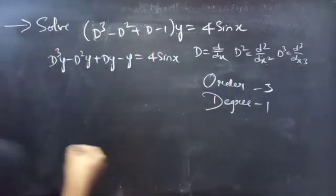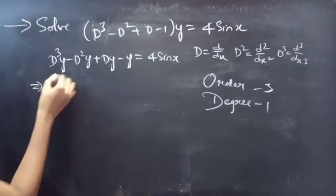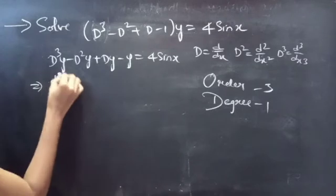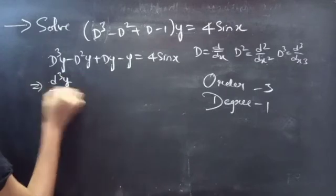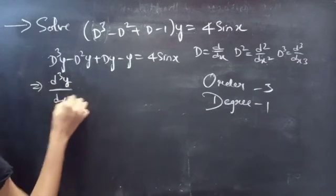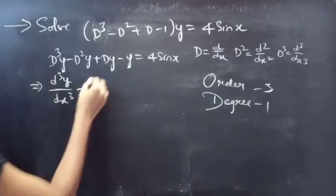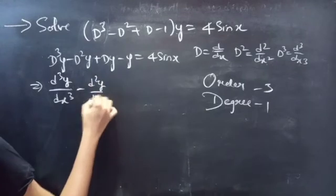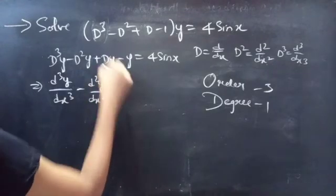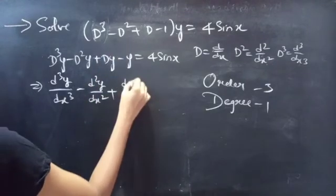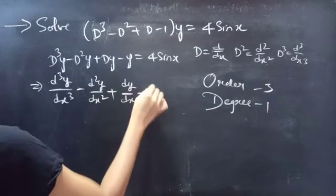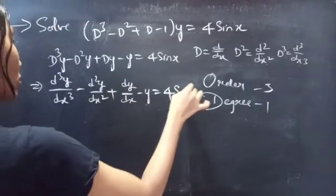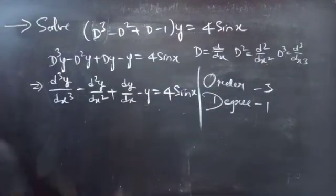We can write the given differential equation as D³y - D²y + Dy - y = 4 sin x. We know that differential operator D is dy/dx, D² is d²y/dx², and D³ is d³y/dx³. So the equation becomes d³y/dx³ - d²y/dx² + dy/dx - y = 4 sin x.